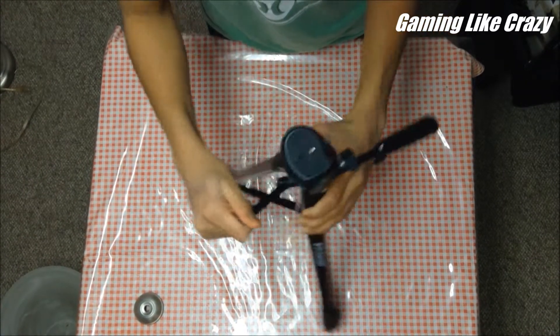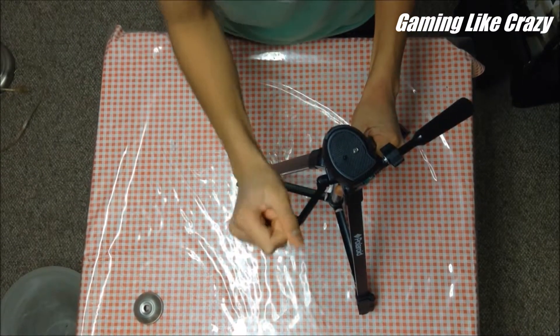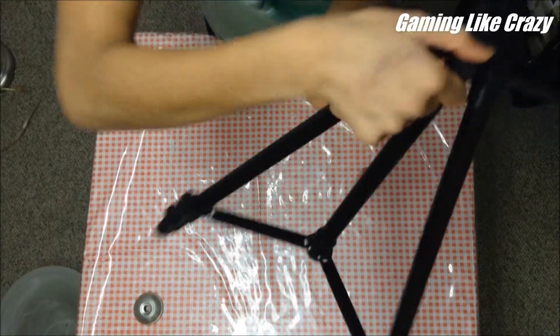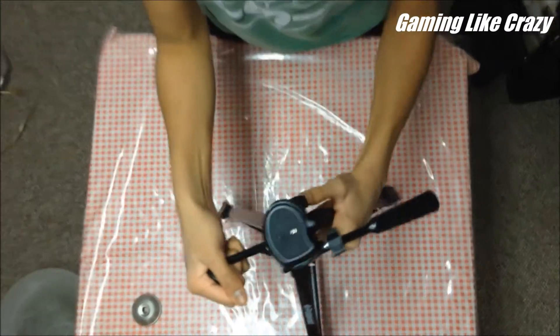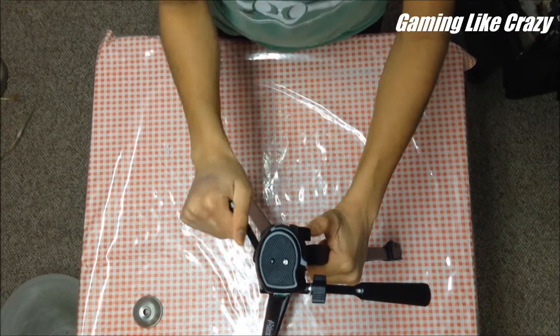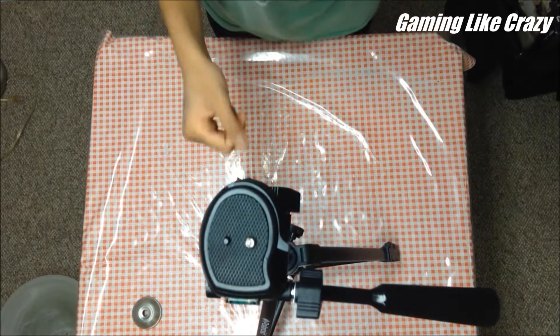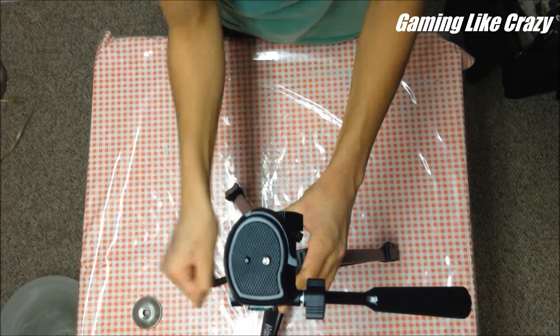This velcro thing, this knob basically gives it extension, but first you have to loosen this right here. That's how tall it is, like halfway. That's the tripod.